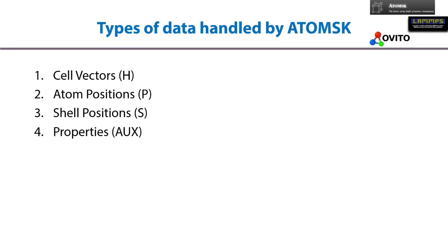Assalamu alaikum, welcome to the very first video of the introduction to ATOMSK playlist. Here I will be discussing the types of data handled by ATOMSK. Firstly, the cell vectors H; secondly, atom positions represented by P; thirdly, shell positions represented by capital S; and lastly, properties represented by AUX.